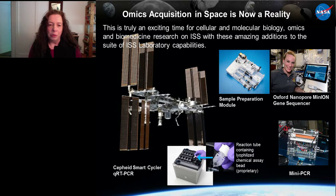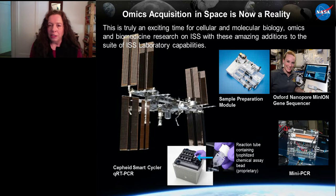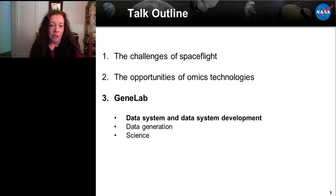It started initially with being able to do QRT-PCR on ISS, and using our sample preparation module to go from tissues or cells all the way to DNA, RNA, and protein. More recently, we've been able to do mini PCR experiments run by students, and also the Oxford Nanopore MinION gene sequencer to actually sequence genes in space. This technology is a really important development, but right now we do all of the analysis on the ground.